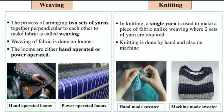The next method is knitting. In knitting, a single yarn is used to make a piece of fabric, unlike weaving where two sets of yarns are required. So the main difference between weaving and knitting is: in weaving we use two sets of yarn, whereas in knitting we use only a single yarn. Knitting is done by hand and also on machines. So I hope weaving as well as knitting is understood.